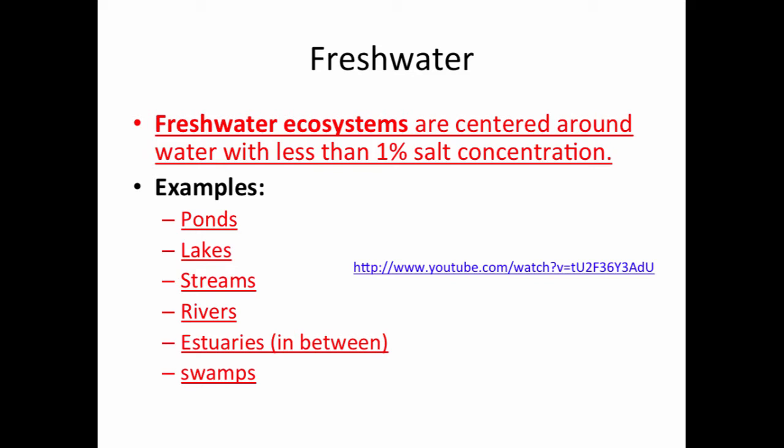A freshwater ecosystem is centered around water that is less than a 1% salt concentration. Because there are two types of water on earth — salt and fresh — freshwater has to have less than 1%. Examples of these types of ecosystems could include ponds, lakes, streams, rivers, estuaries, and swamps.